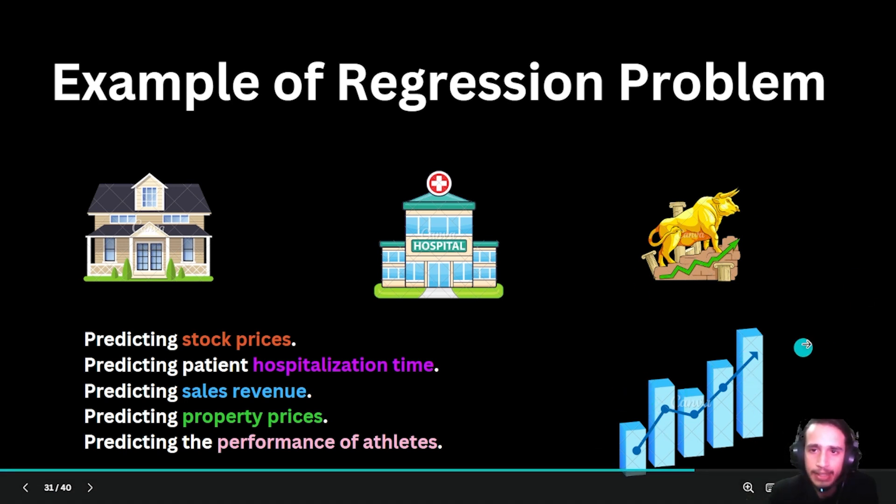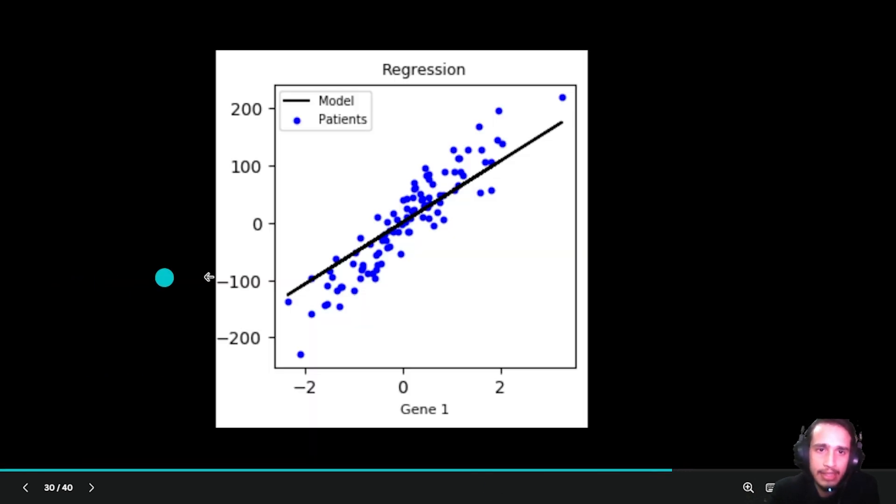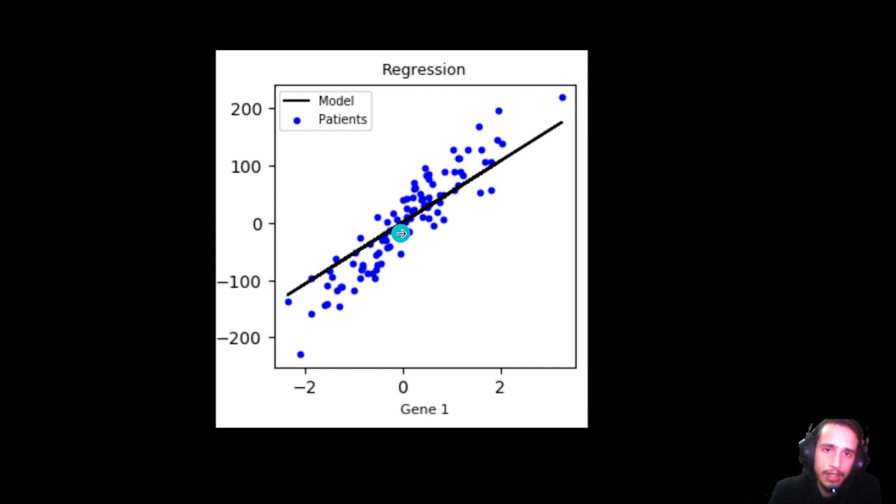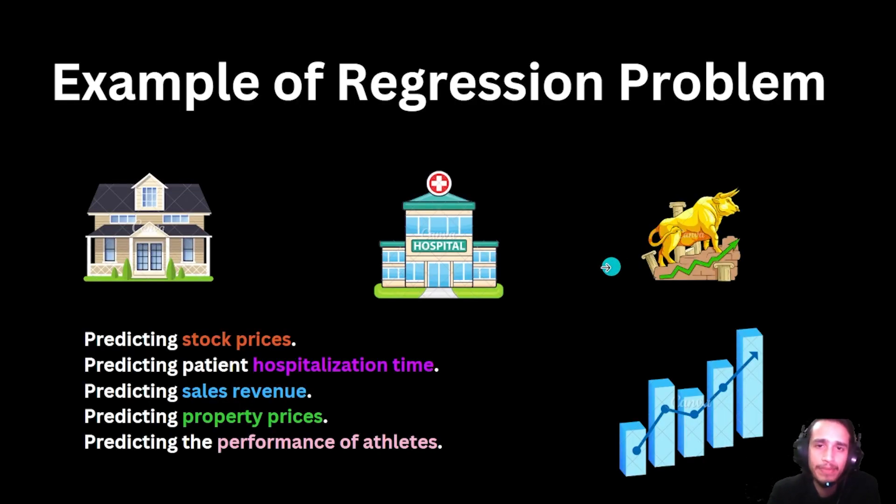This is continuous data. Like you can see that these dots are continuously going up, so we try to plot a line which is best fit on the points. This is what regression is.